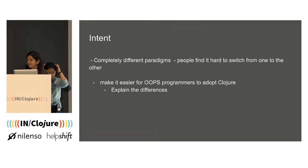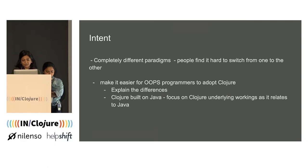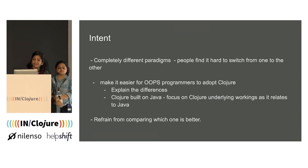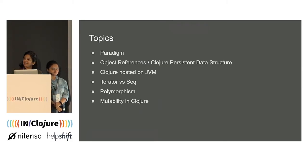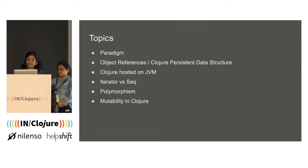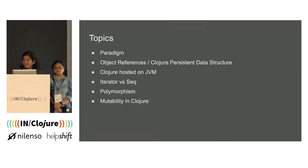We'll explain the differences and the similarities. More importantly, we'll also try to explain the underlying workings so that it's easier for Java programmers to relate to Clojure. We are going to refrain from comparing which one is better. The topics we'll cover: the paradigm — object-oriented versus Clojure; object references in OOP versus Clojure persistent data structures; Clojure is hosted on the JVM; Java iterators versus seqs in Clojure; polymorphism; and mutability in Clojure.